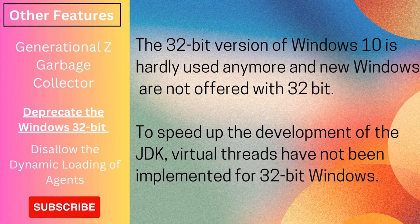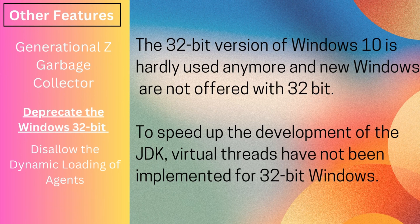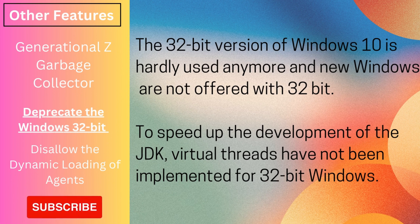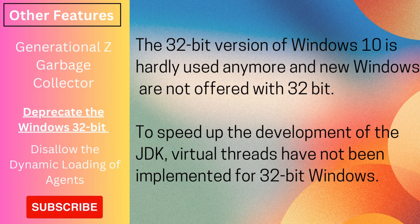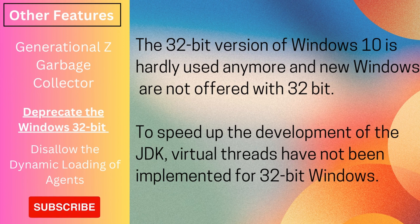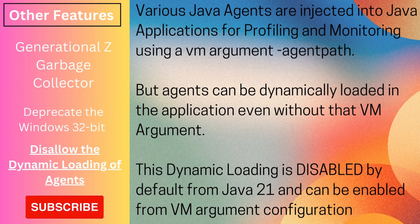The 32-bit version of Windows 10 is now hardly used, and Windows 11 was never offered with a 32-bit version. So there is hardly any need for a 32-bit Windows version of the JDK. To speed up development, virtual threads were not implemented for 32-bit Windows — anyone who tries to start a virtual thread on 32-bit Windows will get a platform thread instead.